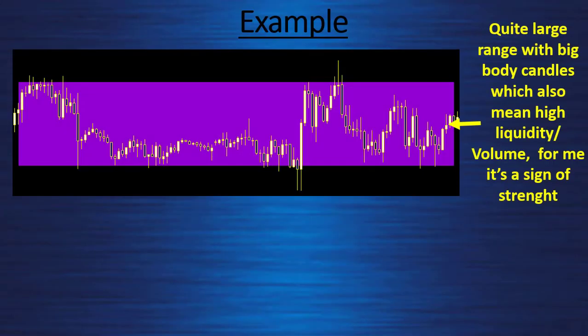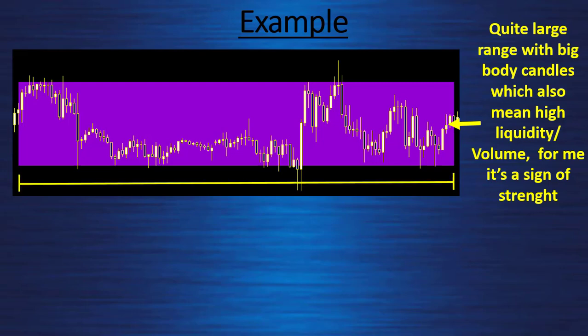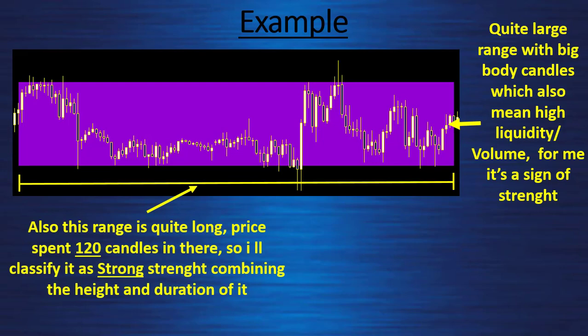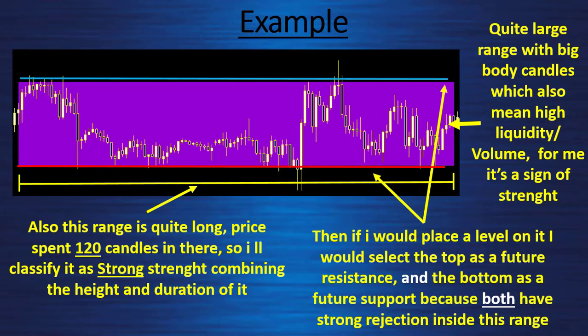In this specific example, we have a quite large range with big body candles, which means high liquidity volume — for me, a sign of strength. Also, this range is quite long; price spent 120 candles in there, so I classify it as strong strength, combining the height and duration. As you can see, I would select the top as a future resistance and the bottom as a future support, because both have strong rejection inside this specific range.